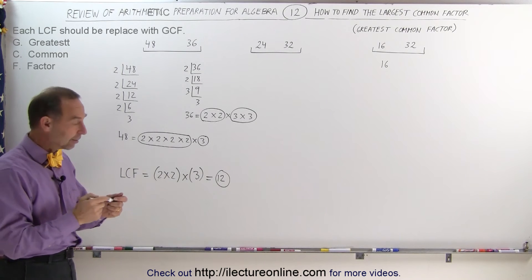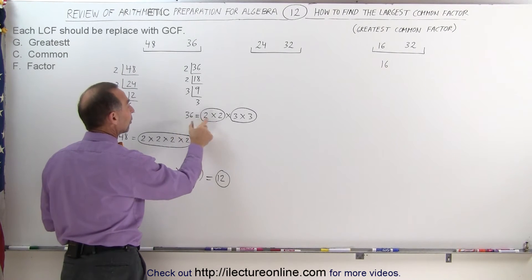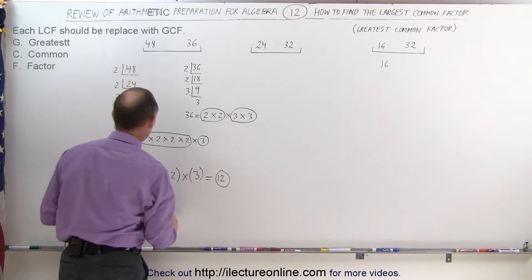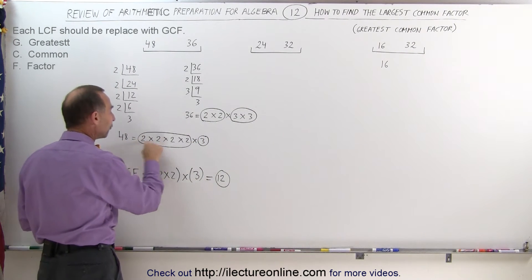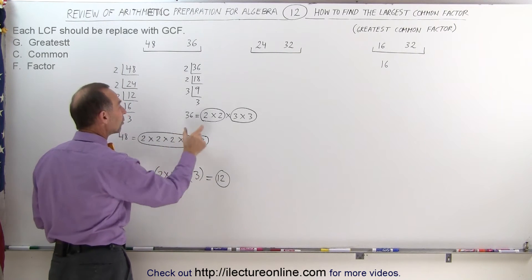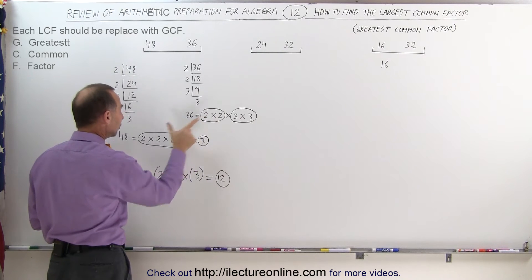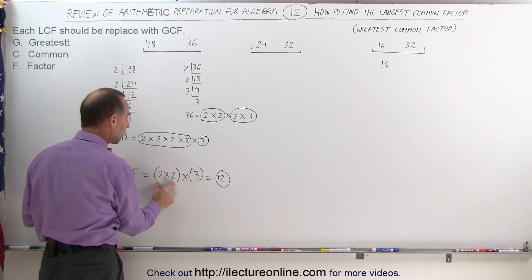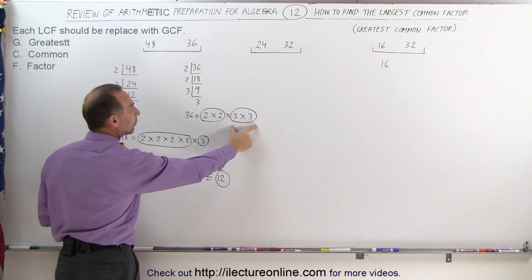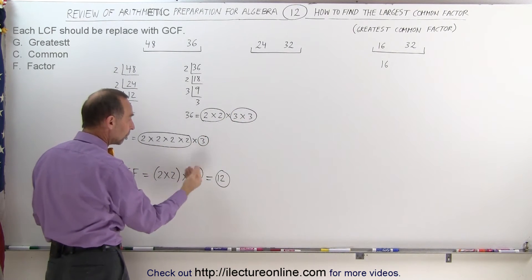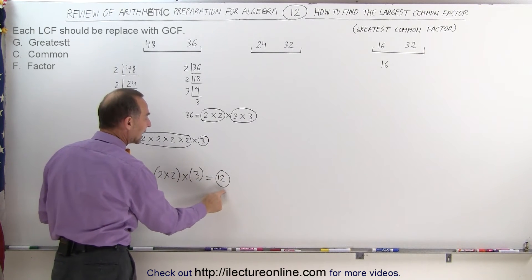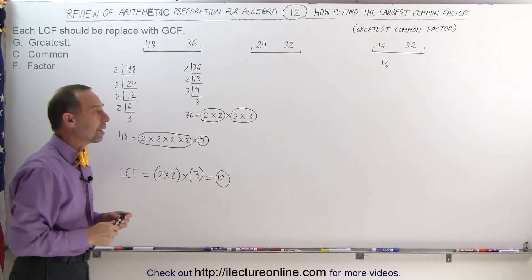To recap: we looked at 36, which has two 2's and two 3's in its prime factorization, and 48, which has four 2's and one 3. We grab the smallest count of each prime: just two 2's and one 3. Multiply those together and that gives you the largest common factor.